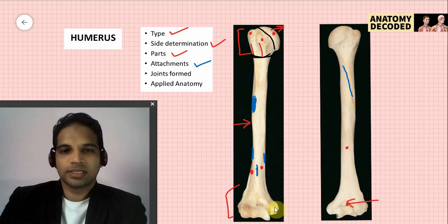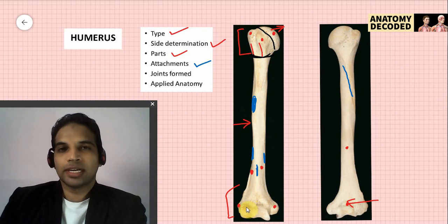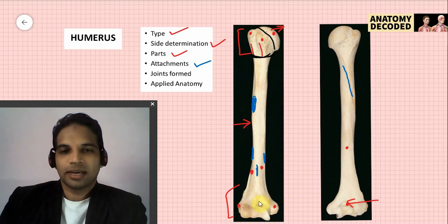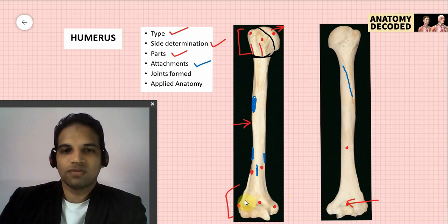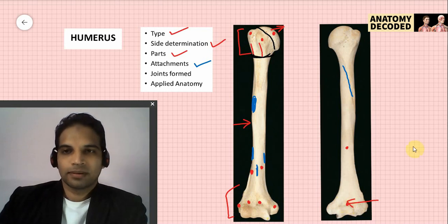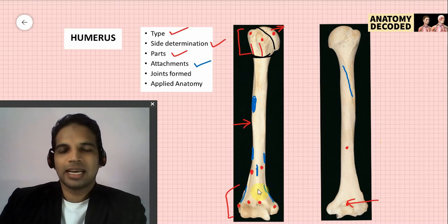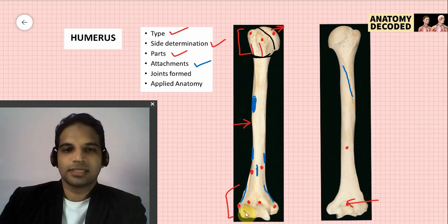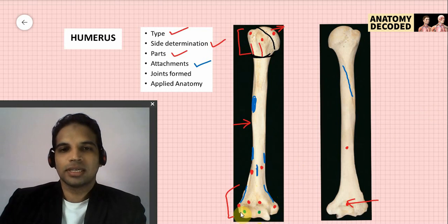The lower end of the humerus has articular and non-articular parts. Non-articular parts include the medial epicondyle, lateral epicondyle, coronoid fossa, radial fossa, olecranon fossa, medial supracondylar ridge, and lateral supracondylar ridge. Articular parts are the capitulum and the trochlea.